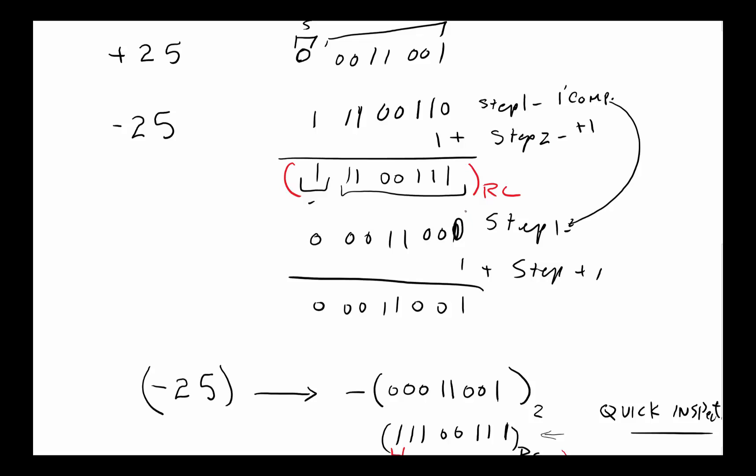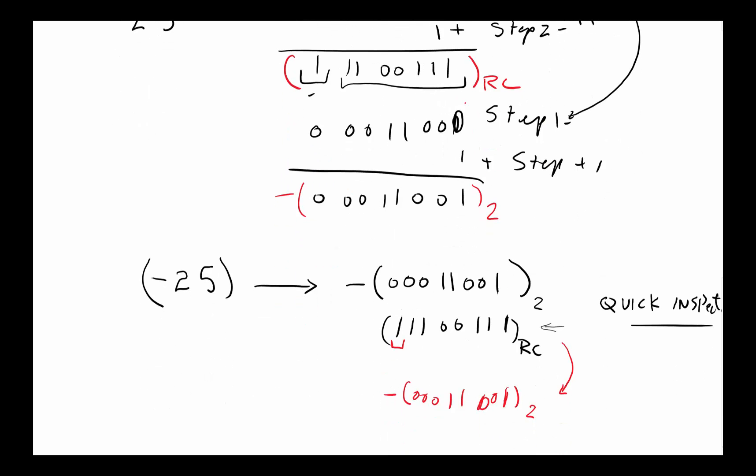We complement all the numbers, add 1 to it, and that becomes our two's complement. In order to go back to the binary number equivalent, we do that two's complement again - complement every digit and add 1. There's the quick inspection, which is a shortcut. We take the number from the right-hand side and copy all the bits down until we hit the first 1, including the first 1, then complement everything after. That brings us to the end of signed binary numbers and the different formats we use for them. Thank you.